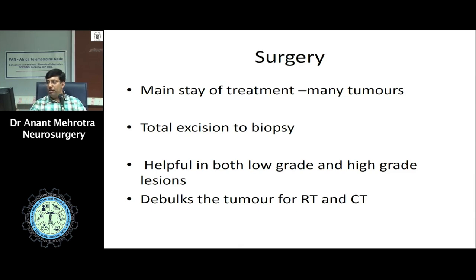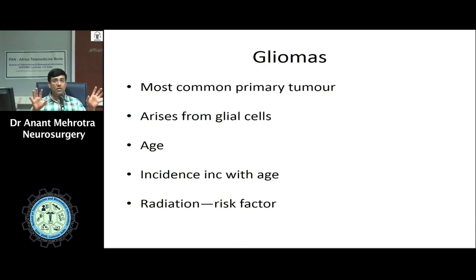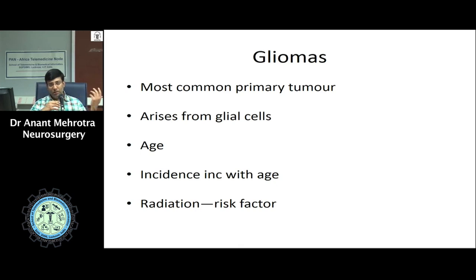The main treatment for brain tumors, because of the mass effect they carry, is surgery. The majority of tumors are operated upon — ranging from total excision, especially in benign tumors like meningiomas, to biopsy only in brainstem gliomas or thalamic tumors where biopsy may be sufficient for further management. Surgery is helpful for both low-grade and high-grade gliomas. After surgery, depending on the biopsy results, radiotherapy, chemotherapy, or a combination can be given. In recent years, addition of stereotactic radiosurgery has also improved outcomes.